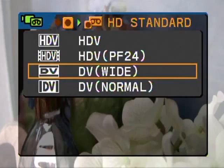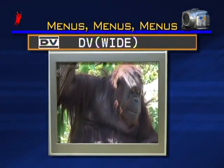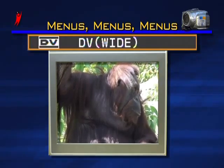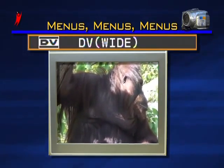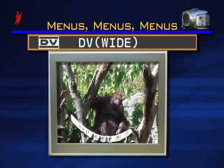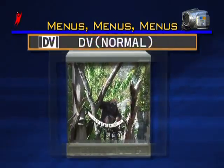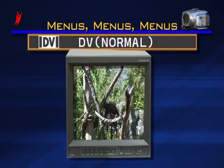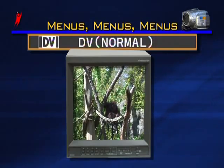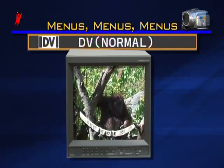DV wide sets your camera to record in standard DV mode, which is 480i, but it will keep the aspect ratio at 16 by 9 as it was in HDV. DV normal records video at 480i but changes the aspect ratio to 4 by 3, which would fit a standard television screen.